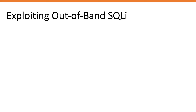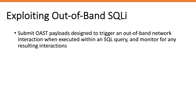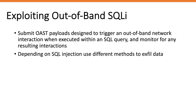For out-of-band SQL injection — a vulnerability that consists of triggering an out-of-band network connection to a system you control — the way to exploit it is to submit out-of-band payloads designed to trigger an out-of-band network interaction when executed within a SQL query, then monitor for any resulting interactions.